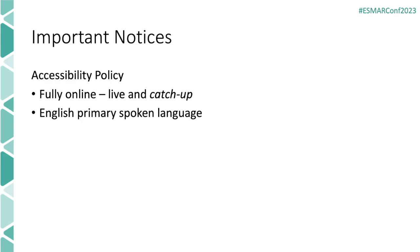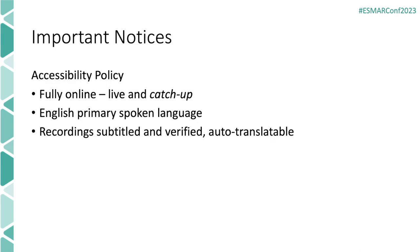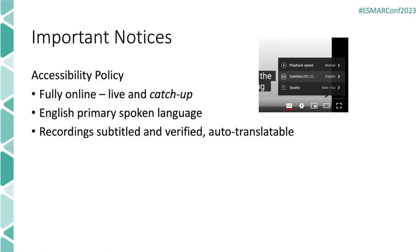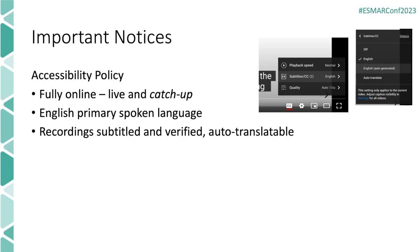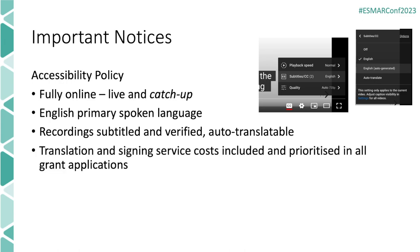We do use English as our primary spoken language, but all of our recordings are subtitled and those subtitles have been verified manually, which means they're auto-translatable. If you click on the closed captions icon — the CC icon — in YouTube, you can select subtitles and then auto-translate to select a language other than English. Under this policy, we always include costs for translation and where possible signing as well.